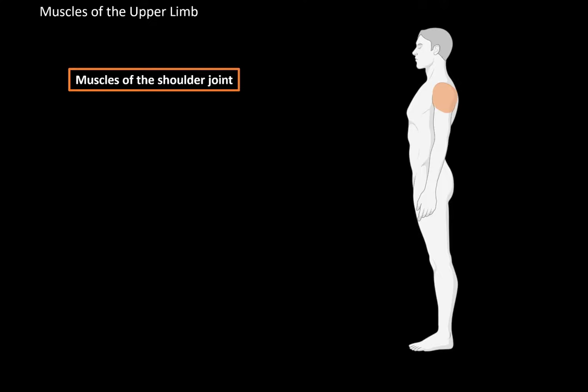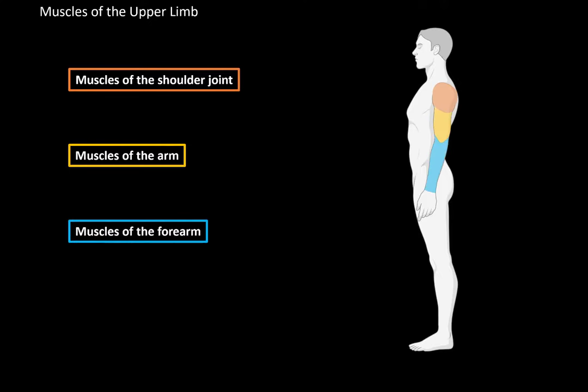The muscles of the upper limb are divided into four parts according to their anatomical location. The first group are the muscles of the shoulder joints. Then we have the muscles of the arm, muscles of the forearm, and then the muscles of the hand.